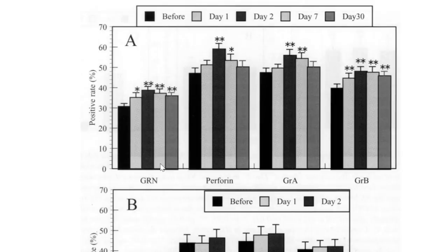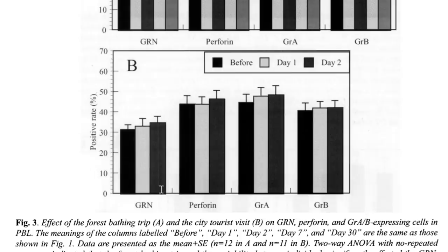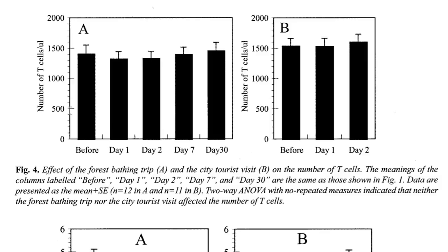What about those enzymes inside the natural killer cells? We can see here again before baseline, we see an increase at day one, day two holding steady at day seven and even elevated at day 30. We see that across the board for all of these enzymes. When we look here at those that went into the city, no statistical significant increase. They did also measure T-cells. Notice that T-cells really didn't change in either of the camps, the city tourists or the forest tourists.